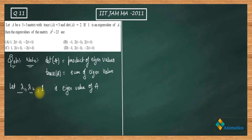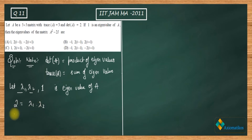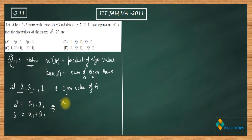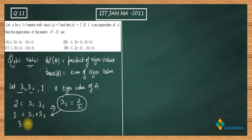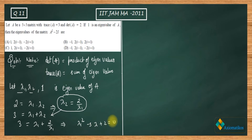Lambda 1 and lambda 2 are the remaining eigenvalues of A. According to note 1, lambda 1 times lambda 2 equals 2, and according to note 2, lambda 1 plus lambda 2 equals 2. From the first equation we get lambda 2 equals 2 divided by lambda 1, and substituting gives 3 equals lambda 1 plus 2 over lambda 1, which leads to the equation lambda 1 squared minus 3 lambda plus 2 equals 0.